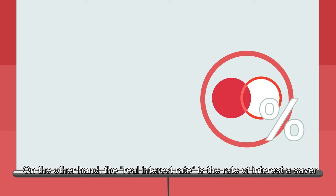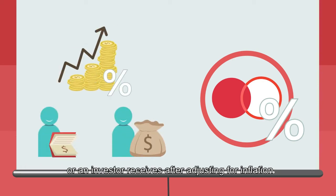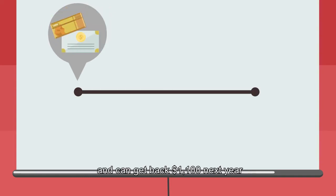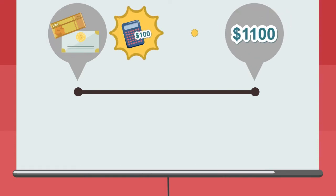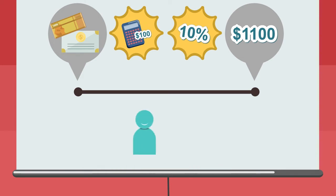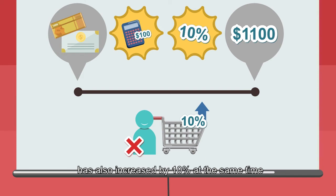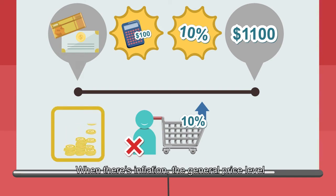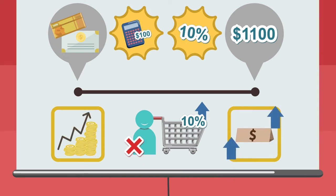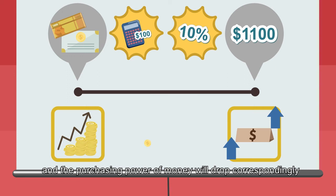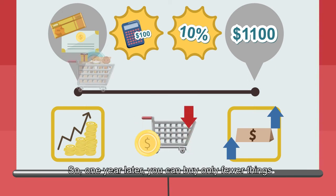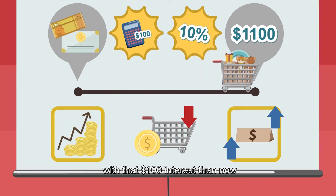On the other hand, the real interest rate is the rate of interest a saver or investor receives after adjusting for inflation. Assume that you use $1,000 to buy a bond today and can get back $1,100 next year — it seems that you have earned $100 interest, or a return of 10%. Yet it doesn't mean that your real purchasing power has also increased by 10%. When there's inflation, the general price level will keep rising during the year, and the purchasing power of money will drop correspondingly, so one year later you can only buy fewer things with that $100 interest.